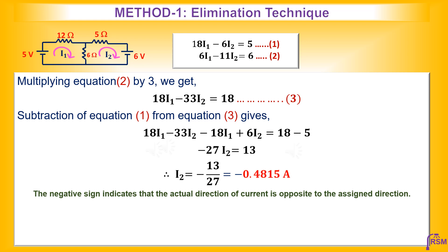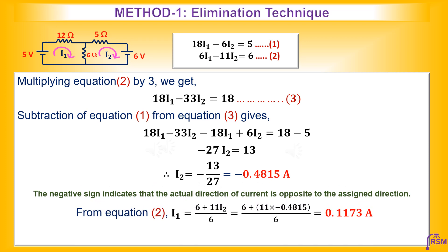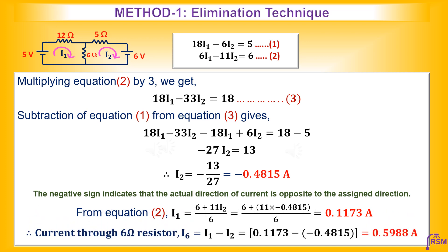To find I1, consider the simpler equation among equations 1 and 2. In this case equation 2 is simpler, so from equation 2, I1 equals (6 plus 11·I2) divided by 6. Substituting the value of I2 gives I1 equals 0.1173 amperes. Once the mesh currents I1 and I2 are known, the current through the 6-ohm resistor is given by I6 equals I1 minus I2, because the mesh currents I1 and I2 flow in opposite directions through the 6-ohm resistor. Substituting the values gives I6 equals 0.5988 amperes. I6 can also be calculated as I2 minus I1, giving minus 0.5988 amperes, where the negative sign indicates the assigned direction is opposite to the actual current direction.